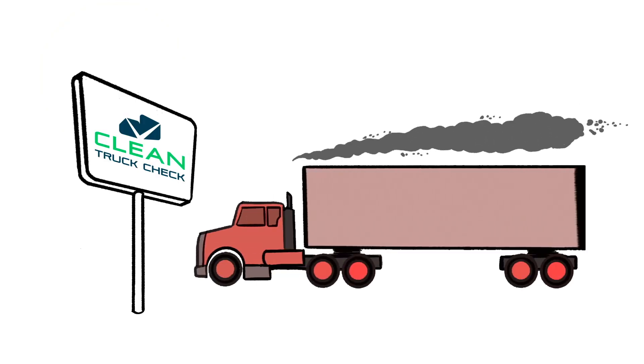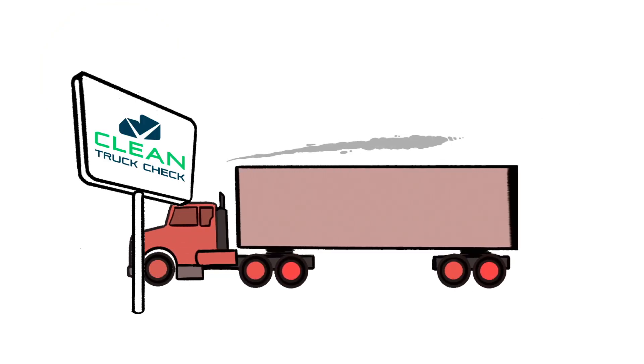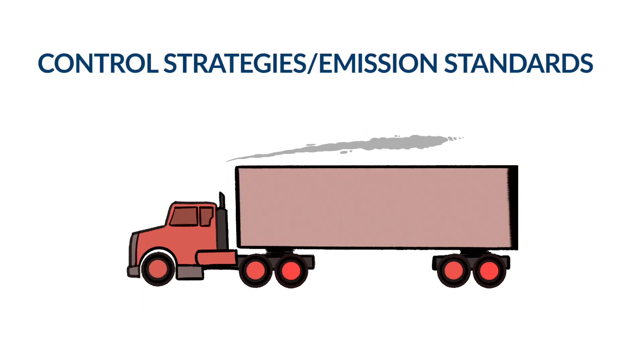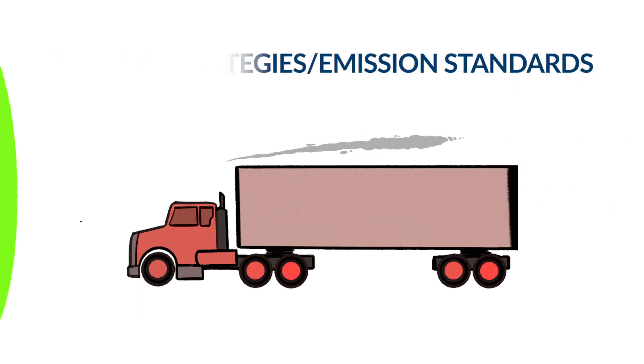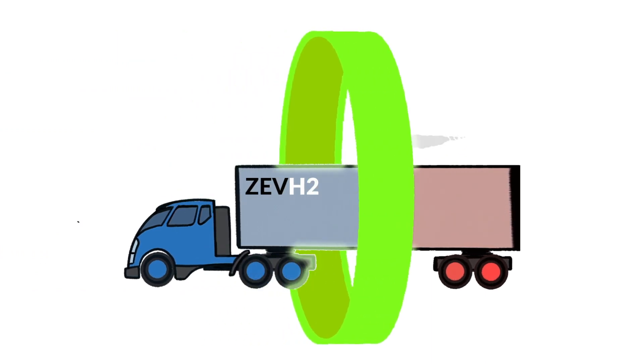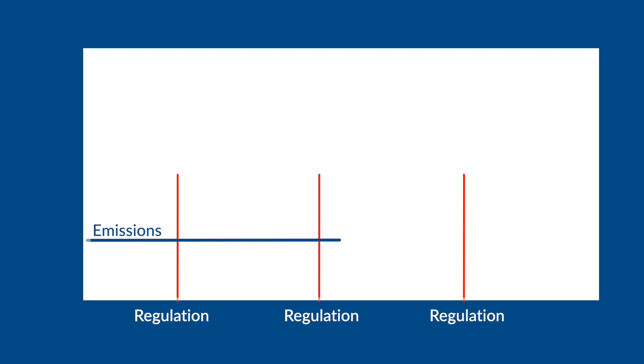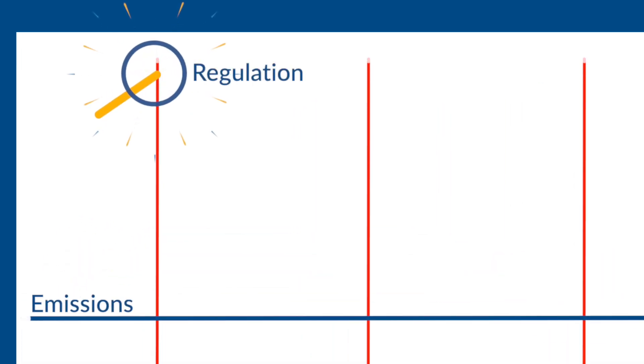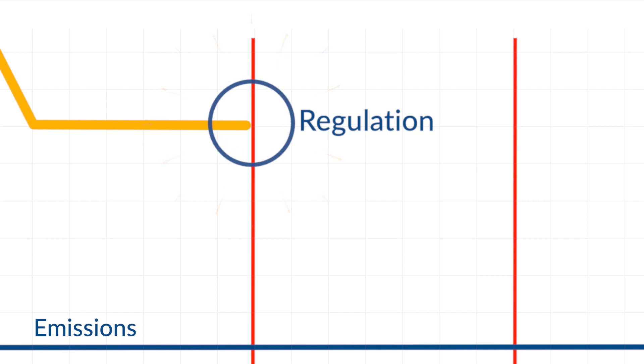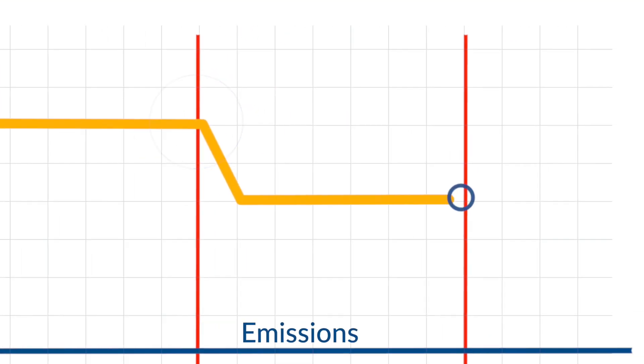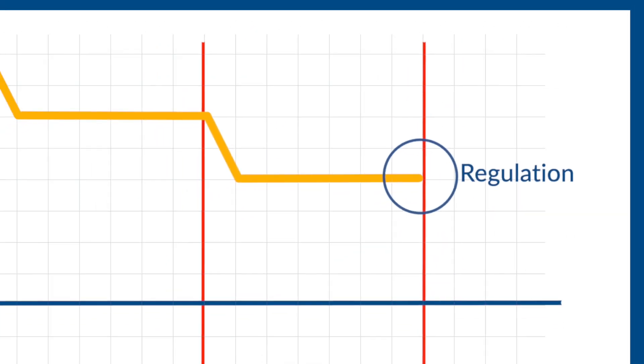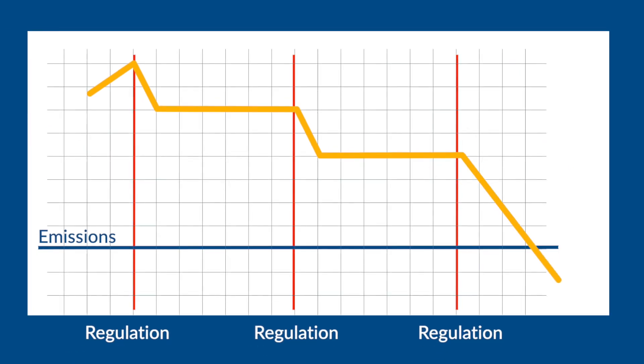The California legislature has given CARB the authority to develop regulations to reduce emissions by implementing control strategies and to set emission standards, which are the maximum amount of pollutants that can be released into the air. CARB adopts emission standards to limit criteria air pollutant, toxic air contaminant, and greenhouse gas emissions. These standards are based on the latest scientific research and technology available.